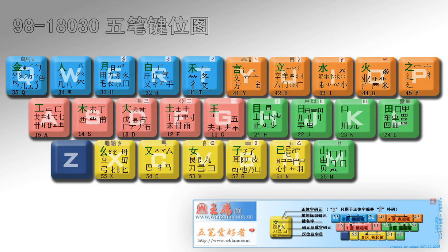In this article, the following convention will be used: 'character' will always mean Chinese character, whereas 'letter', 'key', and 'keystroke' will always refer to the keys on the keyboard. Essentially, a character is broken down into components, which are usually, but not always, the same as radicals. These are typed in the order in which they would be written by hand.